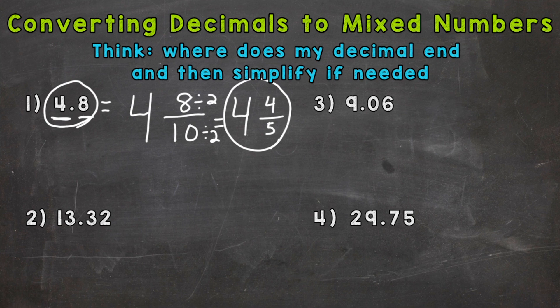Number two we have 13 and 32 hundredths. So we always keep our whole number as is and then where does that decimal end? Well tenths hundredths. It ends in the hundredths place so that's going to be our denominator. And then whatever number is to the right of that decimal that's our numerator. So we have a 32 here. So 32 hundredths.